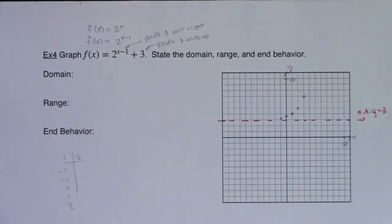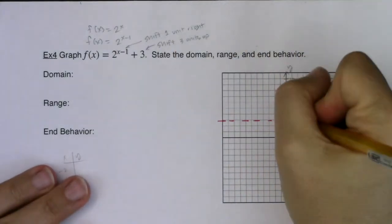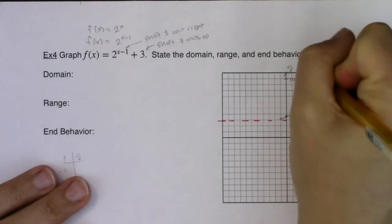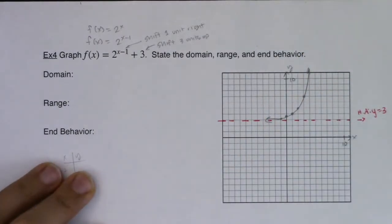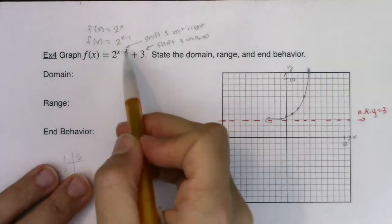I'm going to draw the asymptote first. Okay, there is my horizontal asymptote. And there is my exponential function. Alright, so let's get these traits figured out.